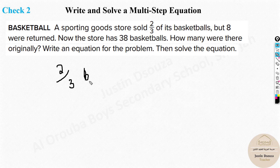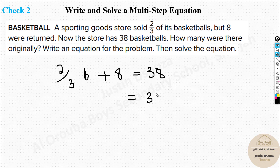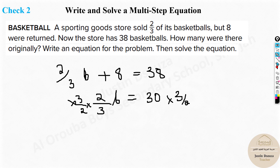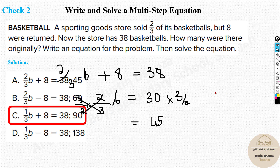Initially the store sold two-thirds of the basketballs, but eight were returned — given back — so it is plus eight, and that equals 38. So: (2/3)b + 8 = 38. Take 8 to the other side: (2/3)b = 30. Multiply both sides by 3/2: b = 45. So there were originally 45 basketballs.